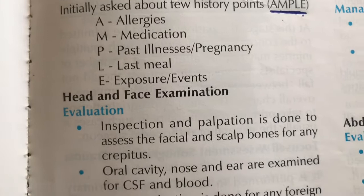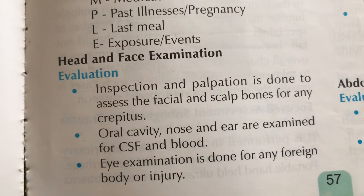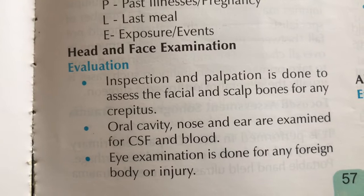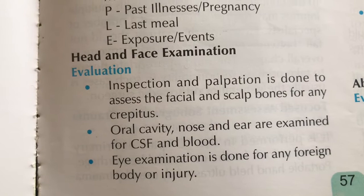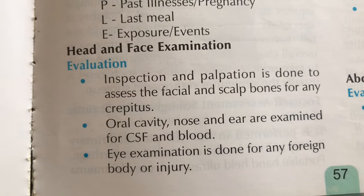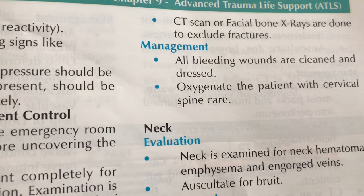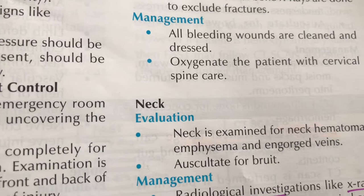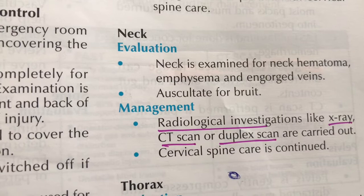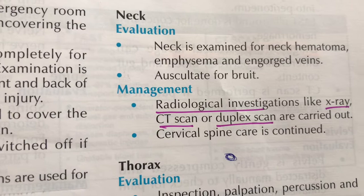Secondary survey begins with head and face examination. Inspection and palpation are done to assess facial and scalp bones for any crepitus. We examine the oral cavity, nose, and ears for blood or CSF. Eyes are examined for foreign bodies. CT scan of facial bones is performed to exclude fractures. Neck examination includes assessment of hematomas, subcutaneous emphysema, vessel engorgement, and auscultation for bruits. Radiological investigations include X-ray, CT scan, and ultrasound. Cervical spine care is continued.